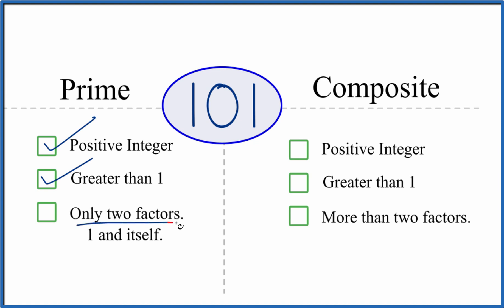And are there only two factors, 1 and 101, that go into 101? So we know 1 times 101, that equals 101. So we have these two factors, but are there any others?